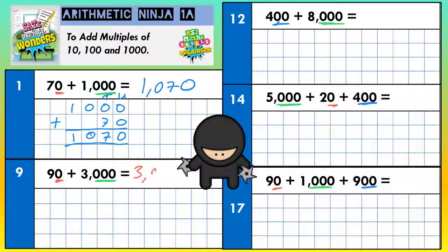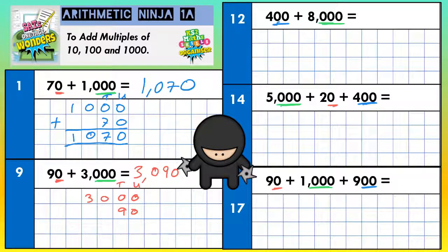3000 plus 90 is 3090 — 3000, no hundreds, and 90. Let's double check with a column method. Zero add zero is zero, zero add nine is nine, zero add zero is zero, and three add zero is three — three thousand and ninety.